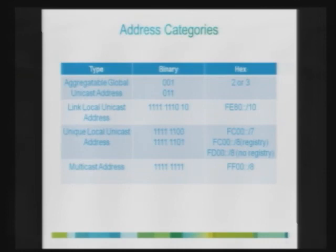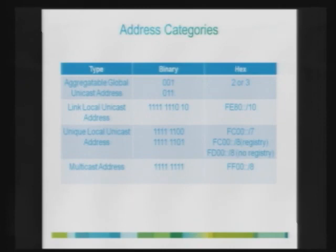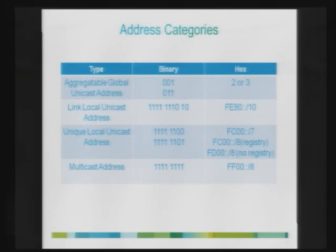For global unicast addresses, the first three bits are always 001 — so those global addresses always start with either a 2 or a 3. Link local unicast addresses are identified by the prefix FE80::/10 — the first 10 bits are constant, identifying them as link local. You have unique local unicast addresses at FC00::/7; the 8th bit can be 0 or 1. Organizations use FD00:: because they set the 8th bit to 1, making FD00::/8 the effective prefix for private addressing.